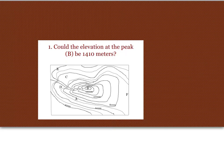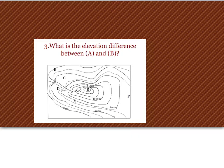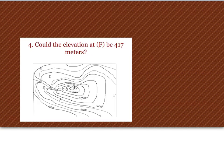Now what I want you to do on your paper is I want you to answer these questions. So could the elevation at the peak, or B, be 1,410 meters? Just answer yes or no. If it's a no, give me about how many you think it could be. Feel free to pause the video if need be. Now I want you to find the elevation at letter E. What is the elevation difference between A and B? So find out what A and B are worth and then find the difference between them. Could the elevation at F be 417 meters? Tell me yes or no. If it's no, tell me how many you think it could be.